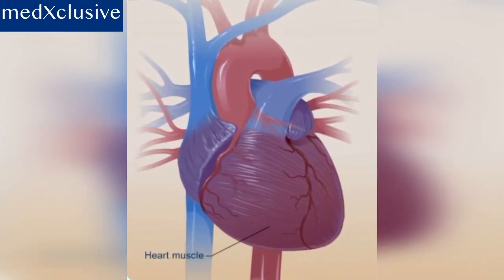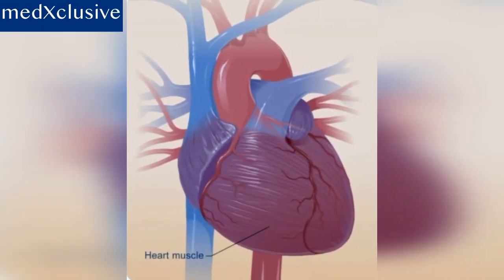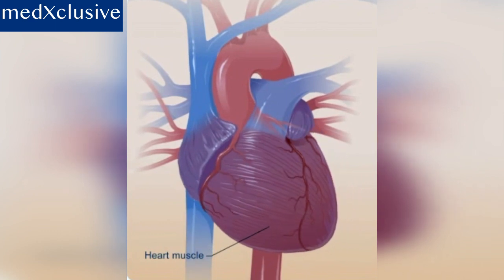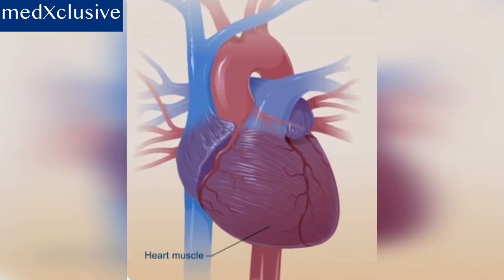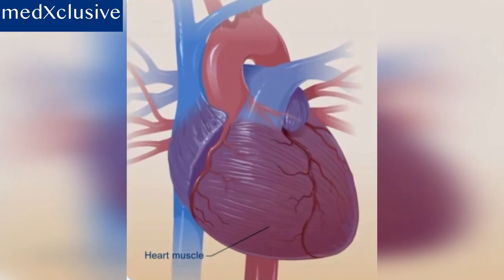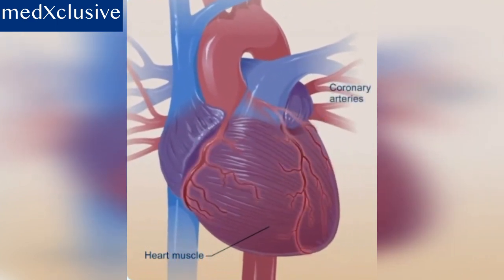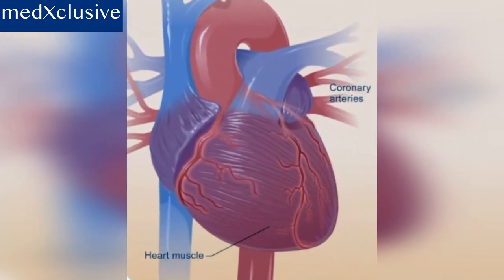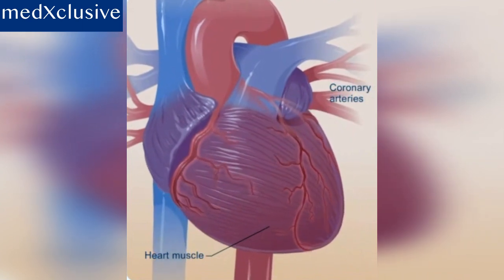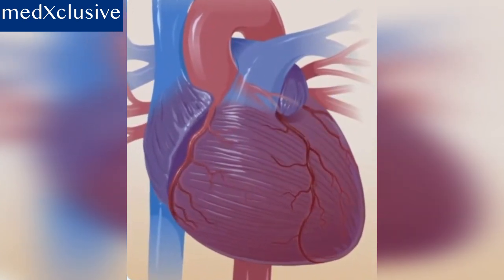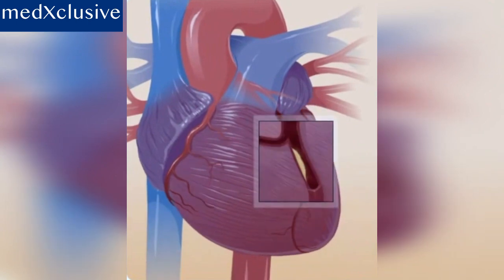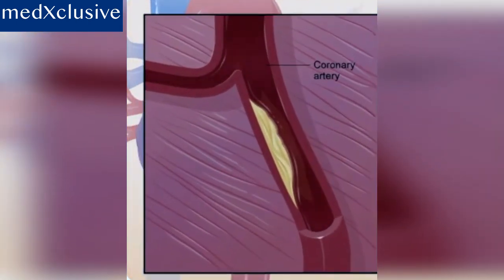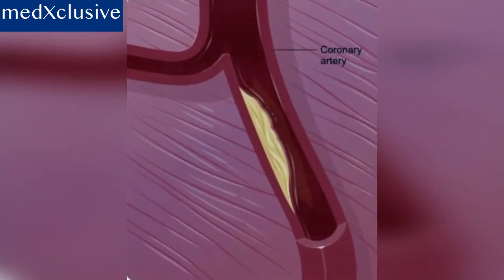When blood flow to part of the heart muscle is blocked, the blockage harms part of the heart muscle because it is no longer getting oxygen from the blood. Most heart attacks are caused by a blood clot that blocks one of the coronary arteries. Occasionally, a heart attack can be caused by a spasm or tightening of a coronary artery. Coronary arteries are the blood vessels that supply oxygen-rich blood to the heart muscle.